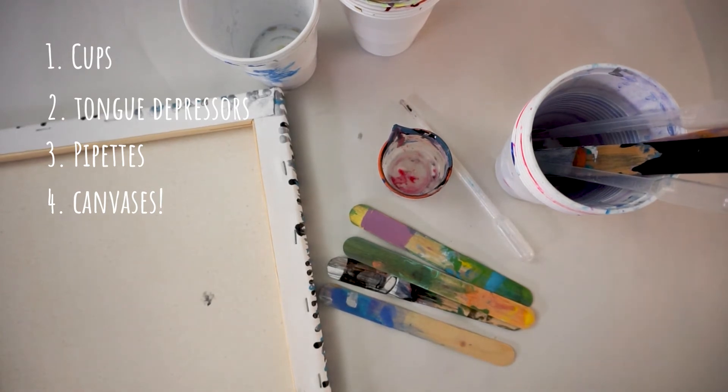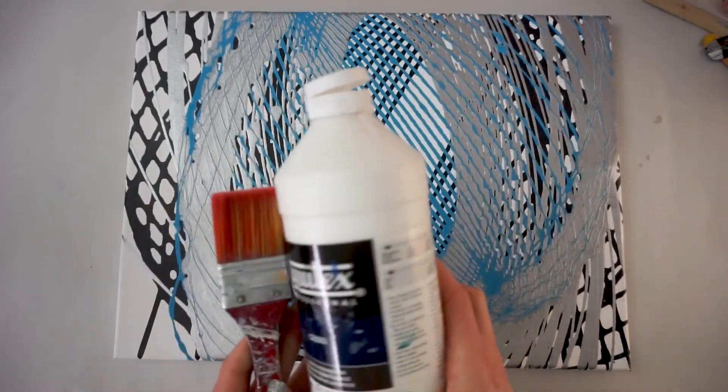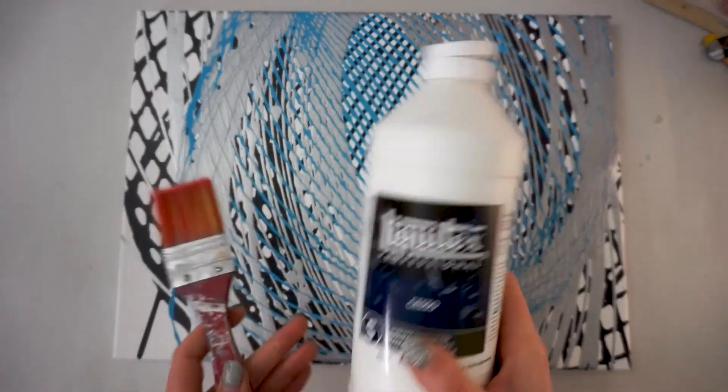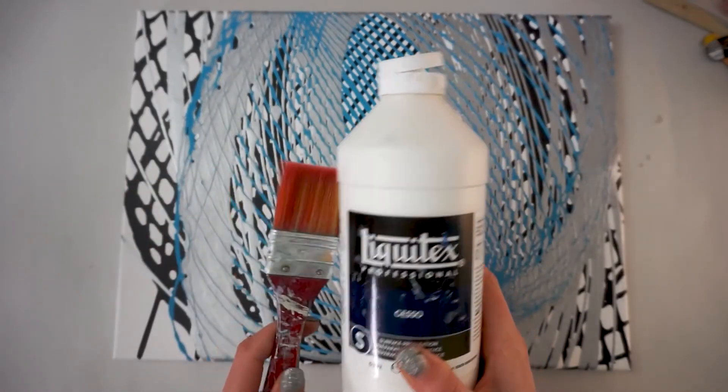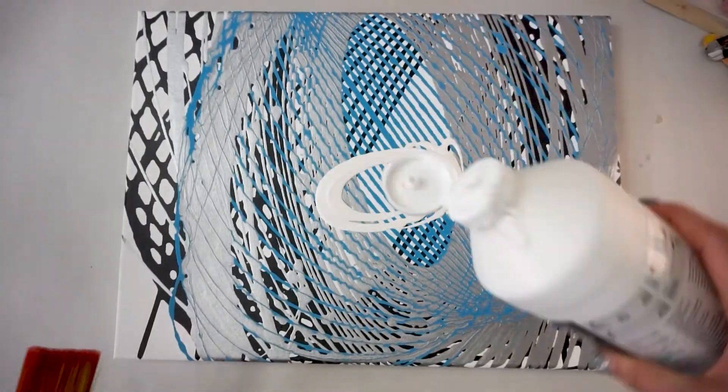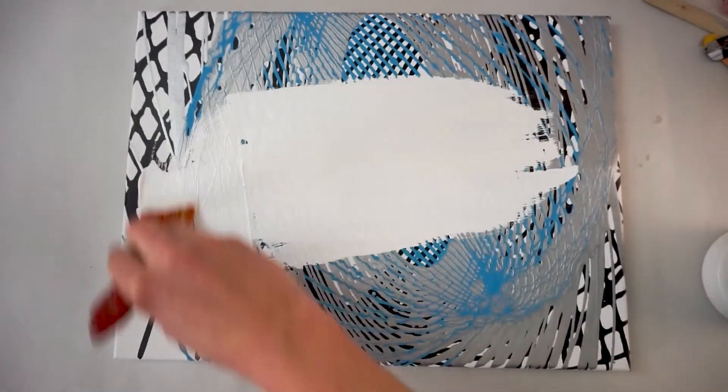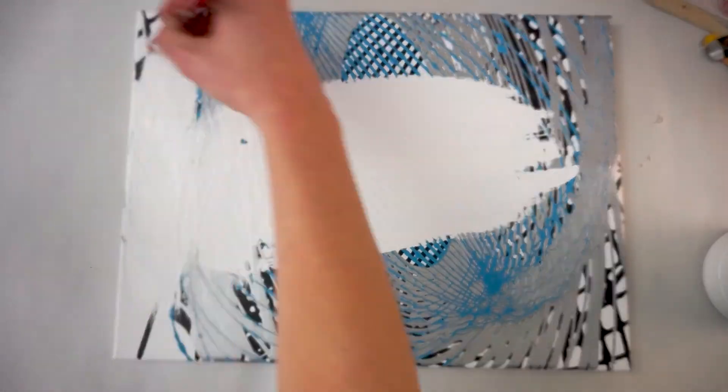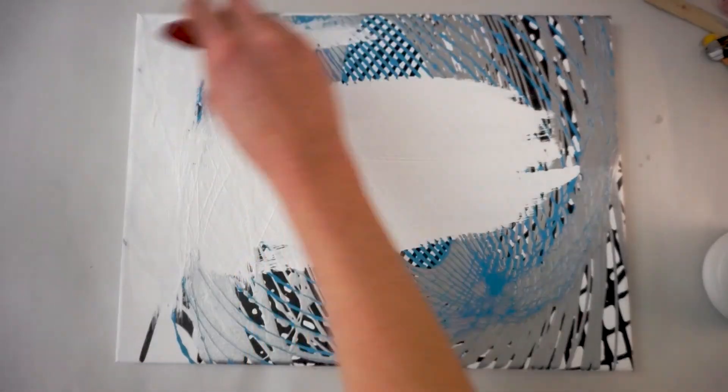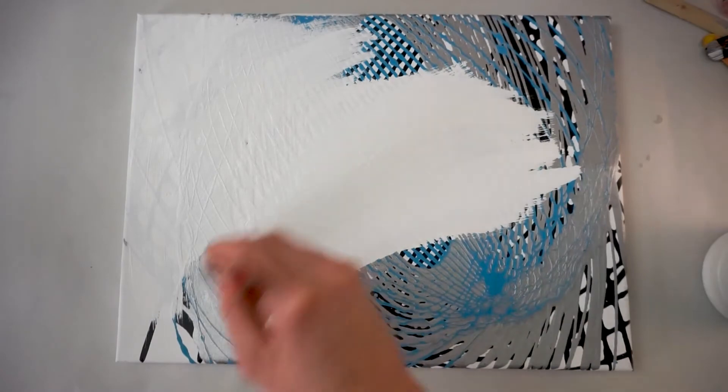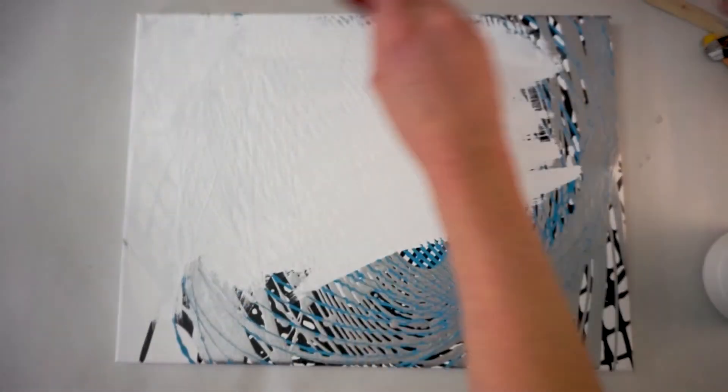And the best way to do this is to put a quick layer of gesso down. You can also just use some white paint, but gesso is going to help things adhere a little better and it has a fuller coverage, so you don't have to do as many layers to actually cover the old canvas up.